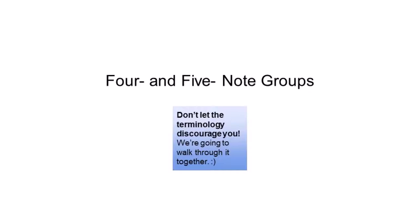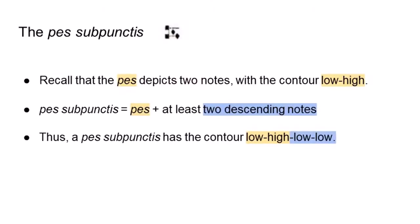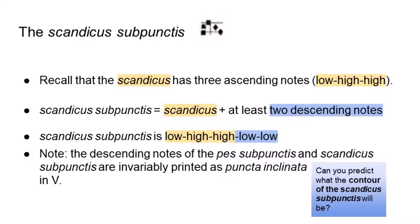Is it apparent yet that the Metz and St. Gall neumes indicate the same gestures, despite their different written appearance? The pez subpunctus adds two or more descending notes to the pez and has the contour low-high-low-low. The scandicus subpunctus adds two or more descending notes to the scandicus and has the contour low-high-high-low-low.